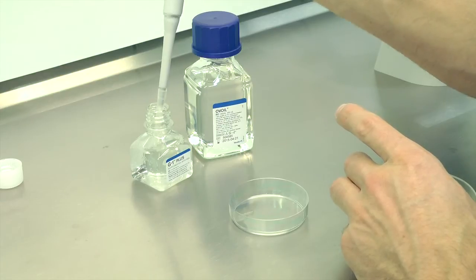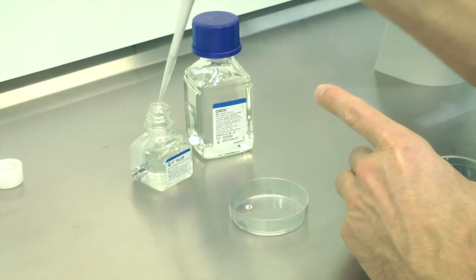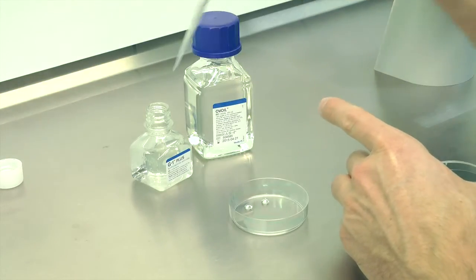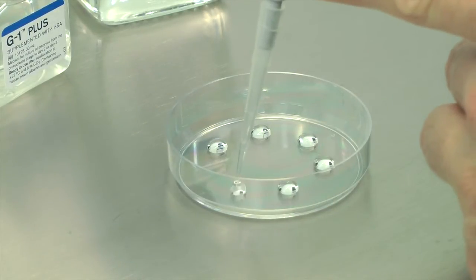I will now demonstrate the use of G1 and G2 for embryo culture. Prepare micro droplet dishes for the washing and culture of embryos with G1 Plus. Use 50 microliters of the G1 to prepare your micro droplet dishes. You can culture up to 5 embryos in each of these droplets.